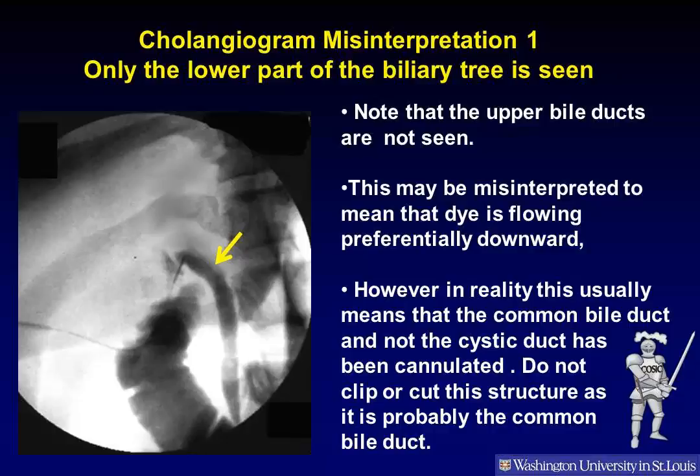Cholangiogram misinterpretation 1: Only the lower part of the biliary tree is seen. Notice in this cholangiogram that the upper ducts are not seen. This may be misinterpreted to mean that the dye is flowing preferentially downward. However, in reality, this usually means that the common bile duct and not the cystic duct has been cannulated.